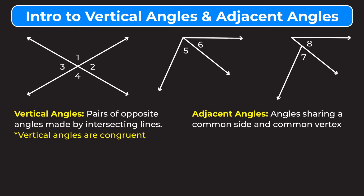First let's talk about vertical angles. Vertical angles are pairs of opposite angles made by intersecting lines, and vertical angles are congruent, which means they have the same measures. We're going to look at the first diagram because it has two lines that are intersecting — intersecting just means crossing over each other. The first pair of vertical angles in this diagram are angles one and four.